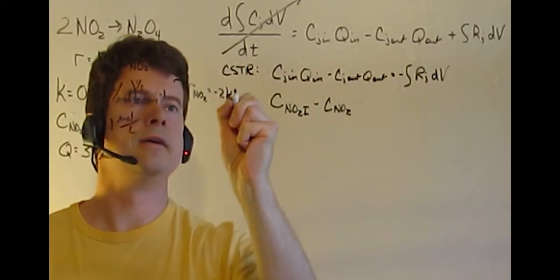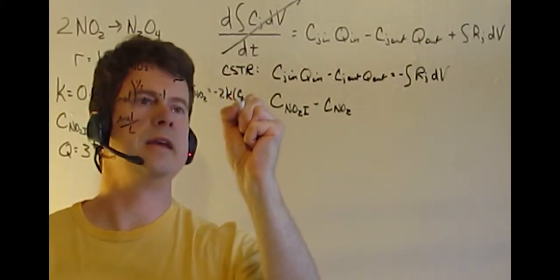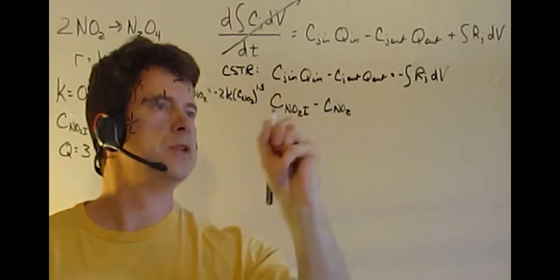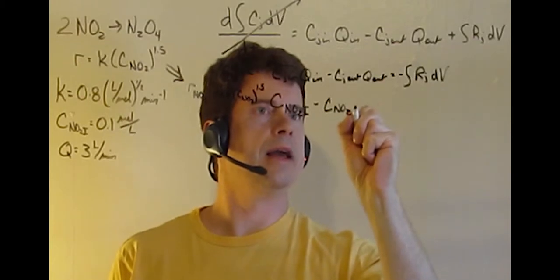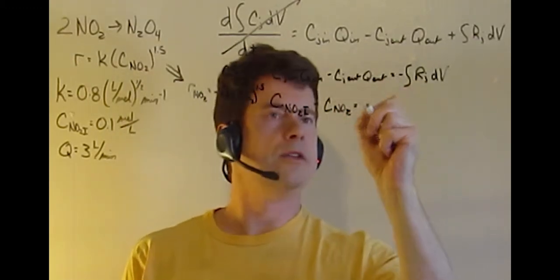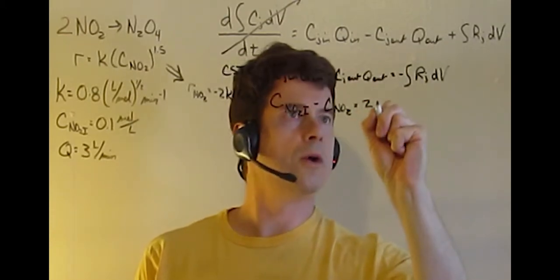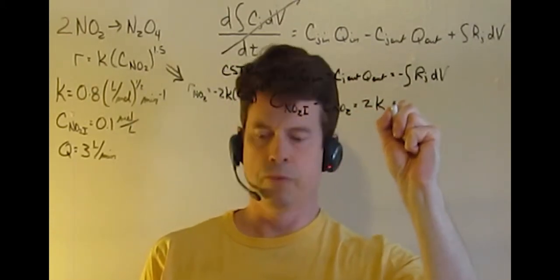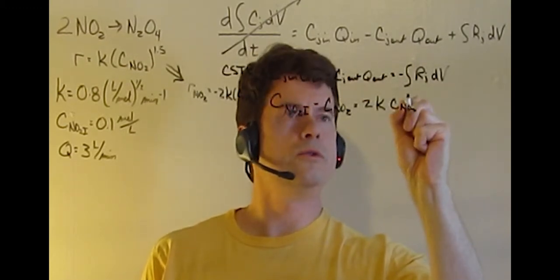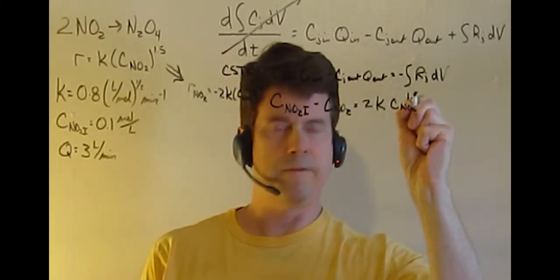2K times CNO2 to the 1.5. So as we put this in, we've got 2 negatives, so that's now 2K CNO2 to the 1.5.